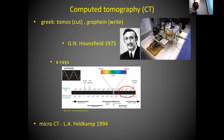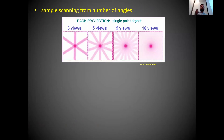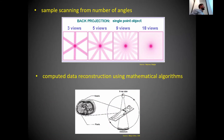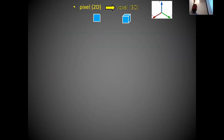The principle is the same: you scan your sample from different angles and use the computer to reconstruct the data. The more angles you have, the more precise the reconstruction. With the advancement of technology, CT introduced some new concepts that needed to be understood.